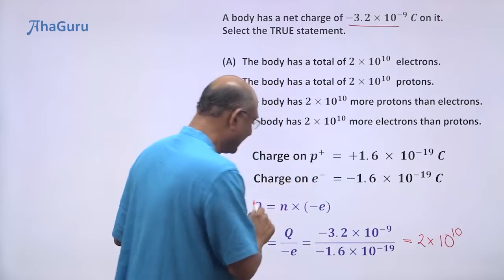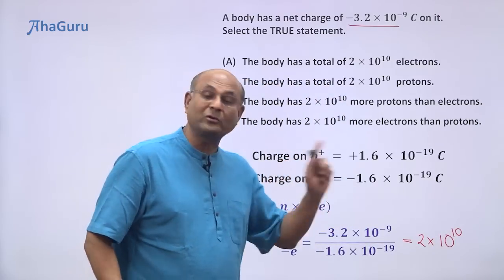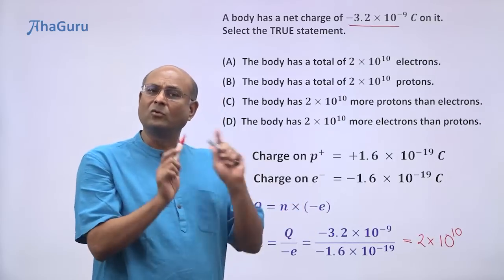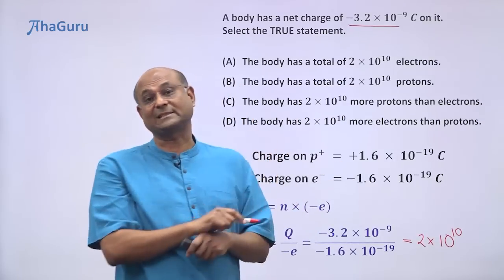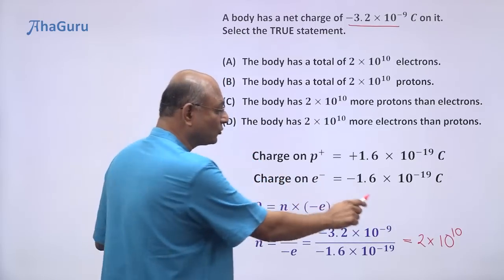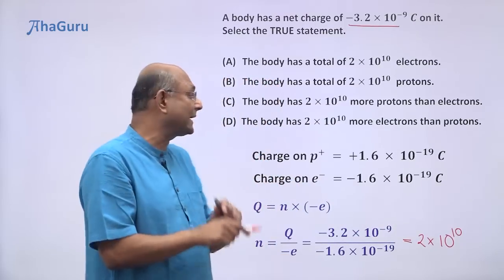So that means we have a total of 2 × 10^10 electrons. That's all? No. That is the excess. So n tells you the excess electrons. So you have 2 × 10^10 excess electrons.